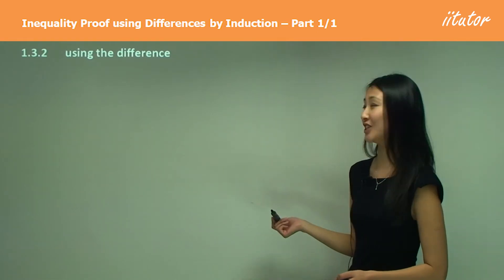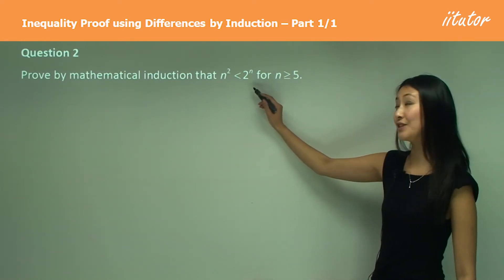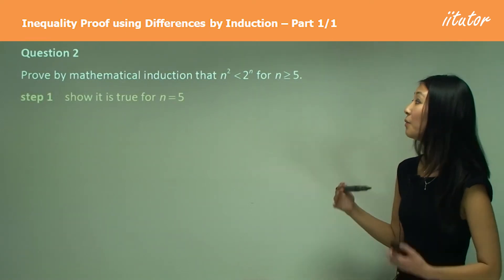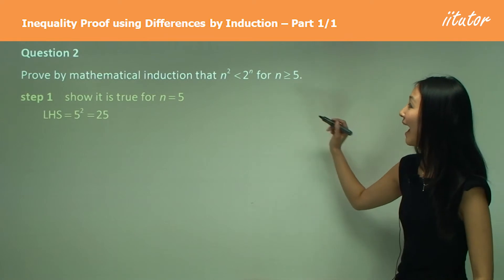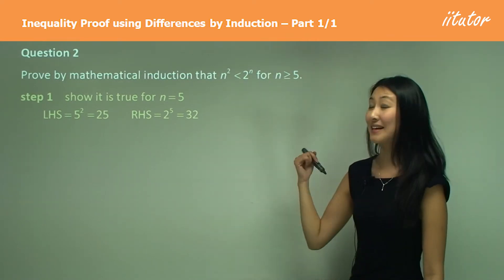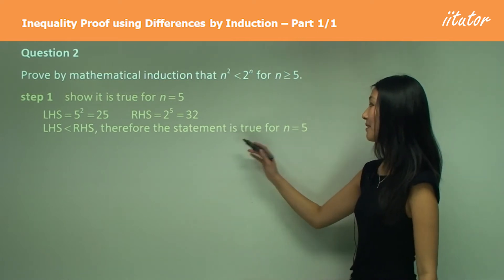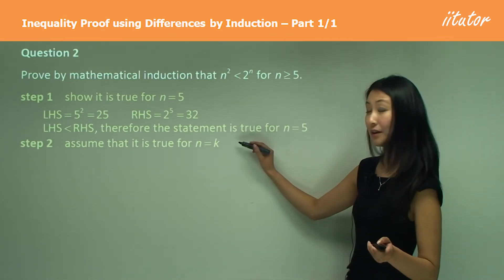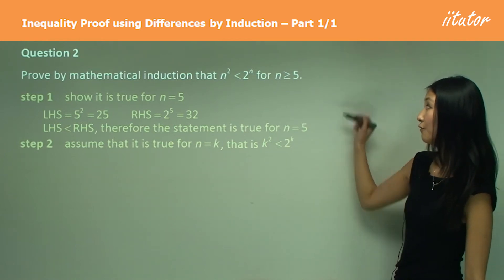Let's apply that to a real question. Question two: we want to prove by mathematical induction that n squared is less than 2 to the power of n, for n greater than or equal to 5. Step one — show it's true for n equals 5. Left hand side: 5 squared is 25. Right hand side: 2 to the power of 5 is 32. So the left hand side is less than the right hand side; the statement is true for n equals 5. Step two — assume it is true for n equals k: k squared is less than 2 to the power of k, for k greater than 5.